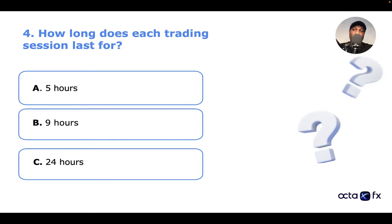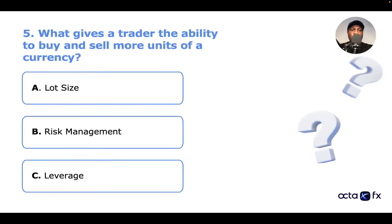If you haven't already, please share the live Forex quiz with your friends so you can learn together. The fifth question: what gives a trader the ability to buy and sell more units of a currency? A: lot size. B: risk management. C: leverage. Let me know in the comments.